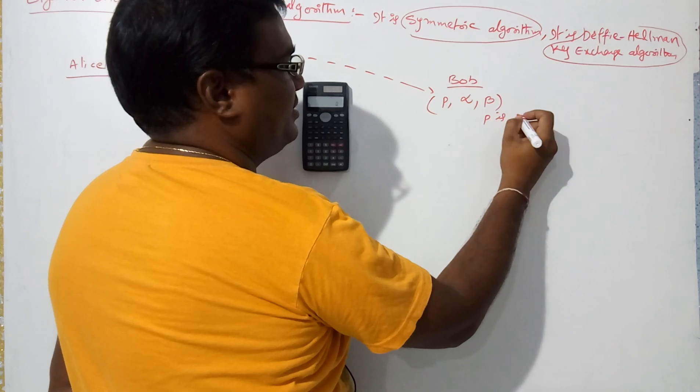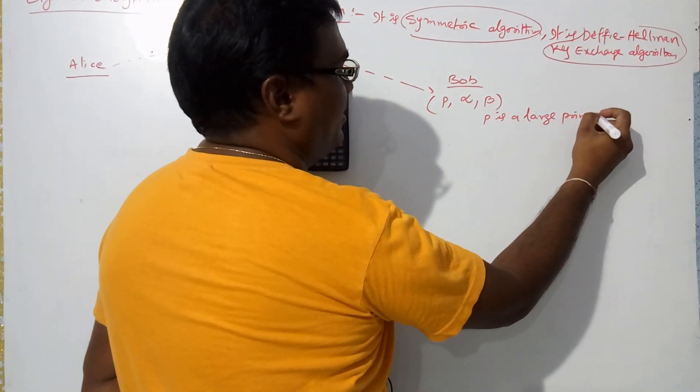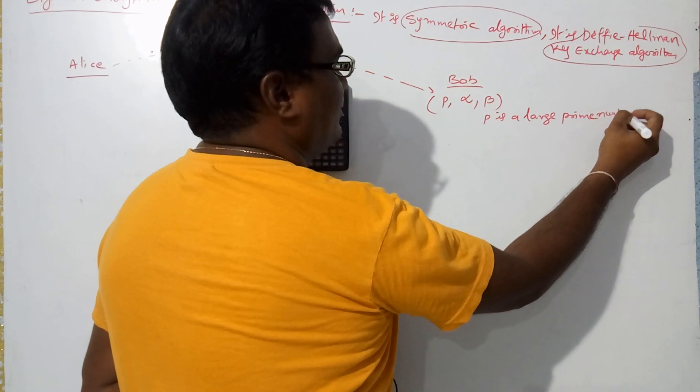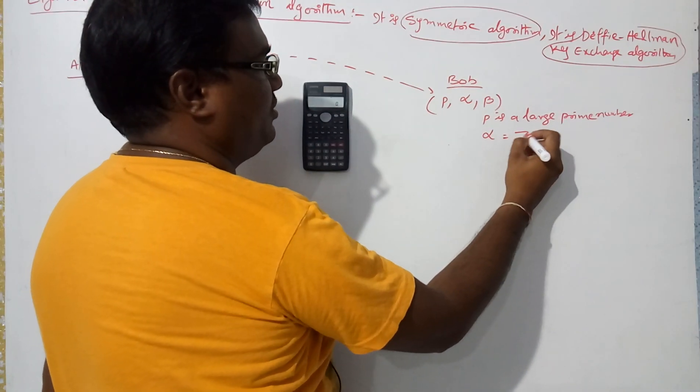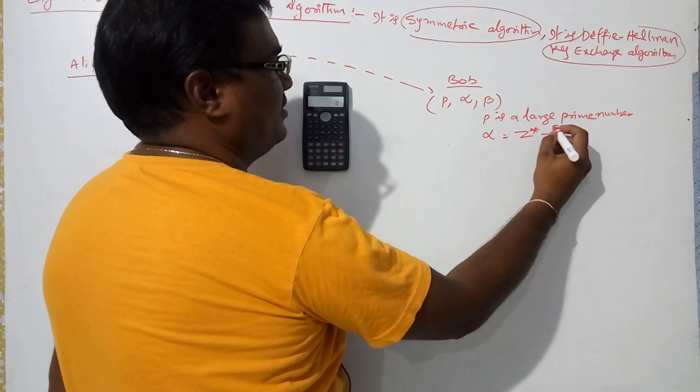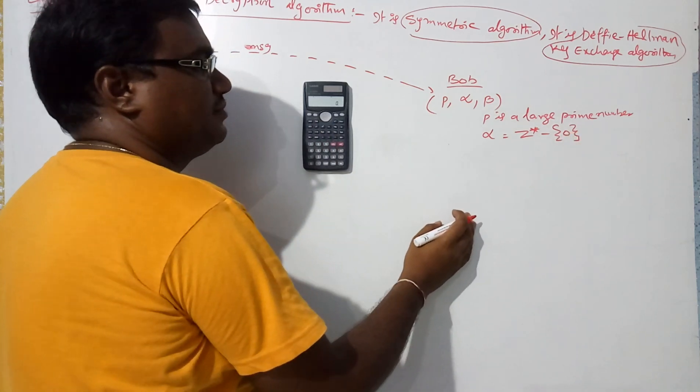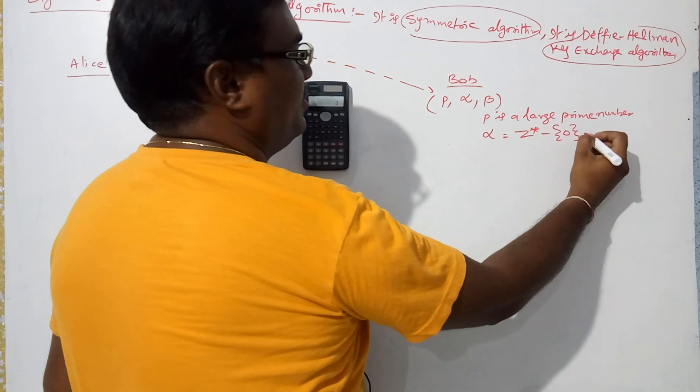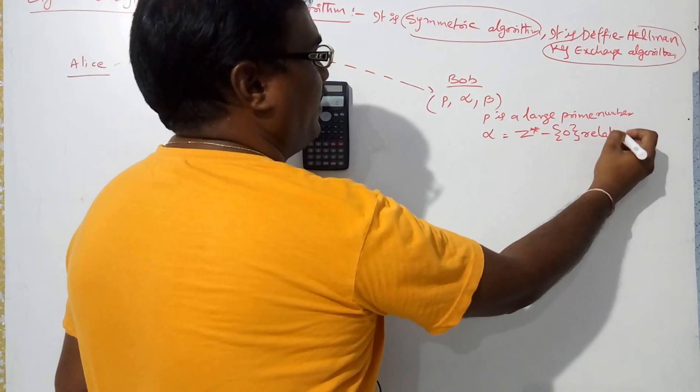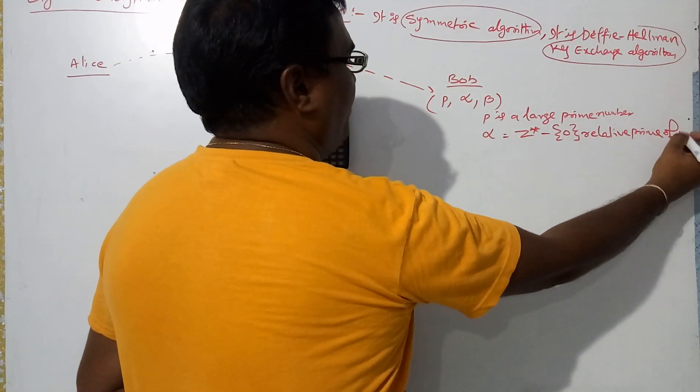p is a large prime number. Alpha is equal to Zp+ minus 0, meaning exclude the 0, relative prime numbers of p.